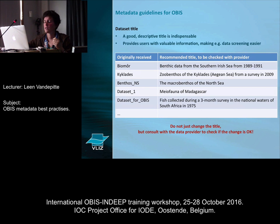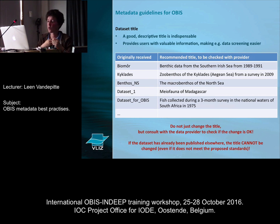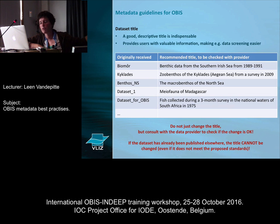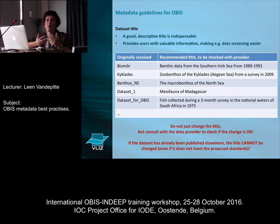What's really important is that if you receive a dataset with a very short, bad title, you do not just change it yourself, but actually communicate back to the person you received it from to make sure it's okay to change the title. You need good communication and feedback with the people you're working with. The only problem is that if a dataset has already been published somewhere under that name, it cannot be changed, because that would create confusion — for example, if GBIF has it under one title and we have it under another, that creates duplicates when OBIS data goes to GBIF.